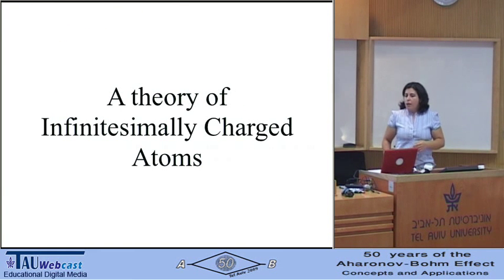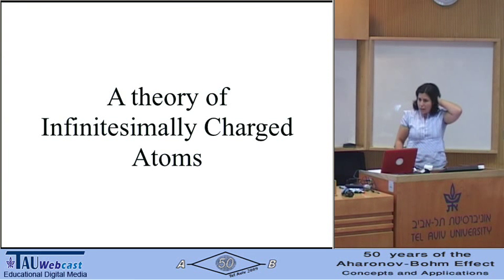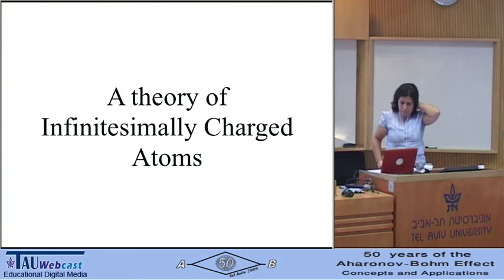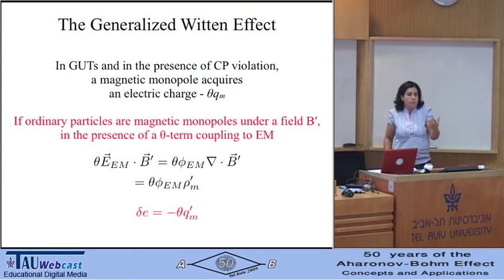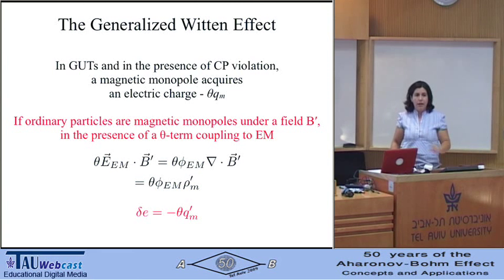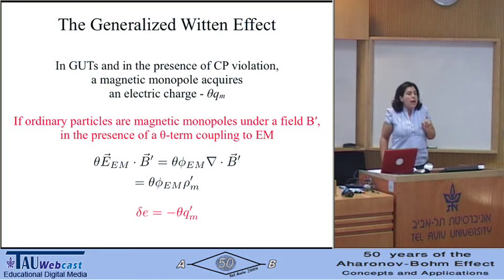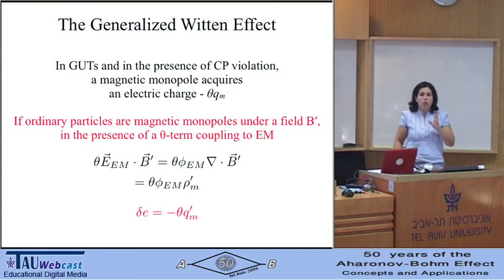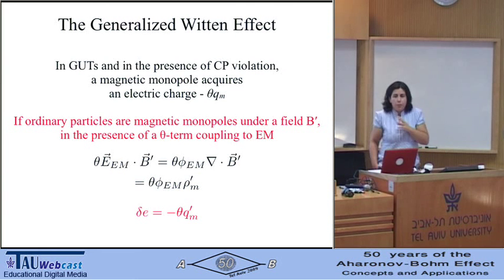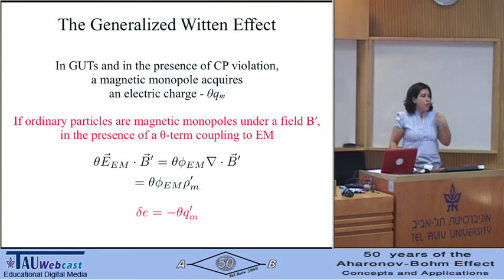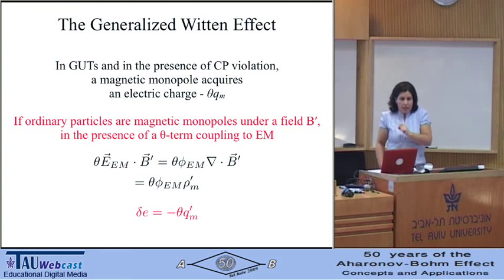Is there a reason to believe we will see anything with these experiments? In gauge theories as we know them, if I have magnetic monopoles, they would acquire a non-quantized charge due to CP violation. Now imagine that elementary particles — electrons, quarks, neutrinos — have a magnetic charge under a field B', and this field couples to electromagnetism through an E dot B coupling. Then there will be a charge shift for ordinary particles proportional to the coupling between electromagnetism and that field, and how much charge they carry.